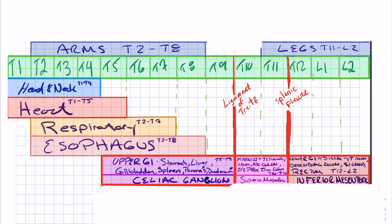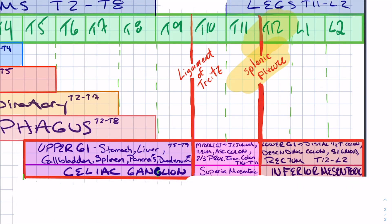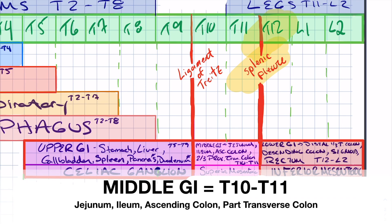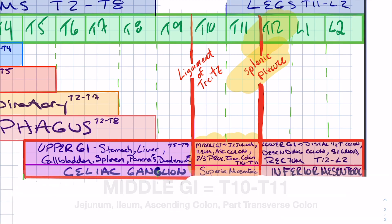The next major landmark is the splenic flexure. Anything after the ligament of Treitz and before the splenic flexure is the middle GI — jejunum, ileum, ascending colon — and that's going to be T10 and T11, associated with the superior mesenteric ganglion. Everything after the splenic flexure is the lower GI — distal transverse colon, descending colon, sigmoid, rectum — all of those will be T12, L1, L2, associated with the inferior mesenteric ganglion.